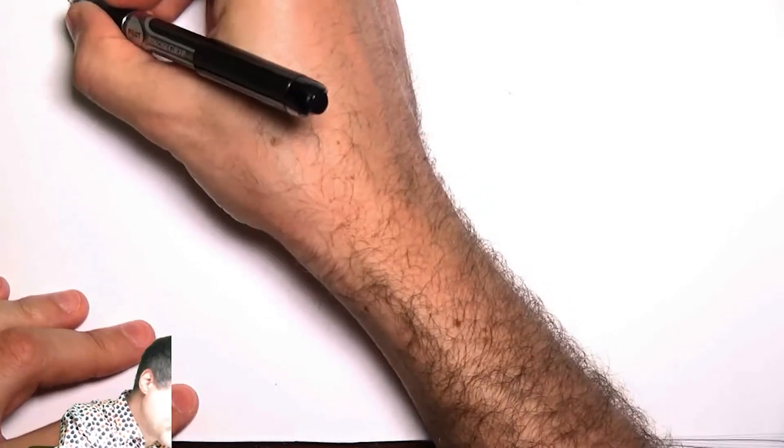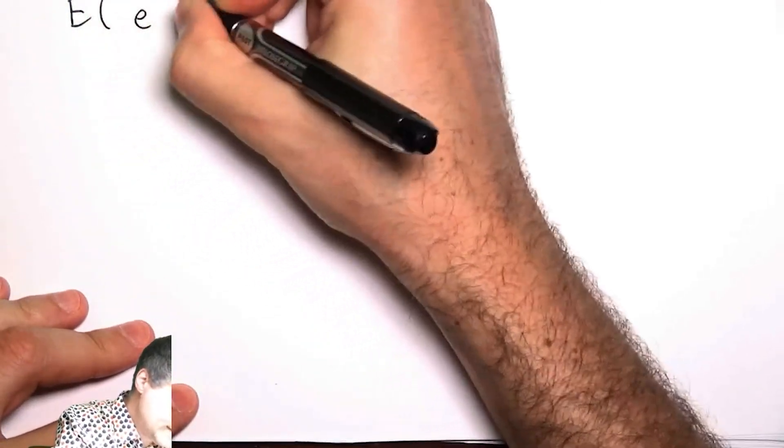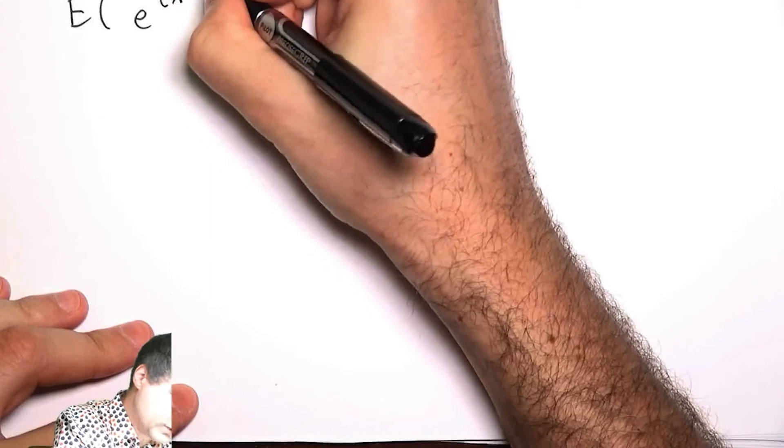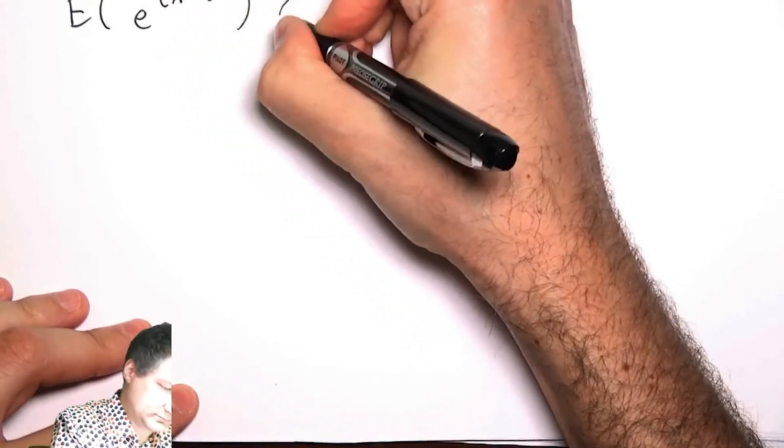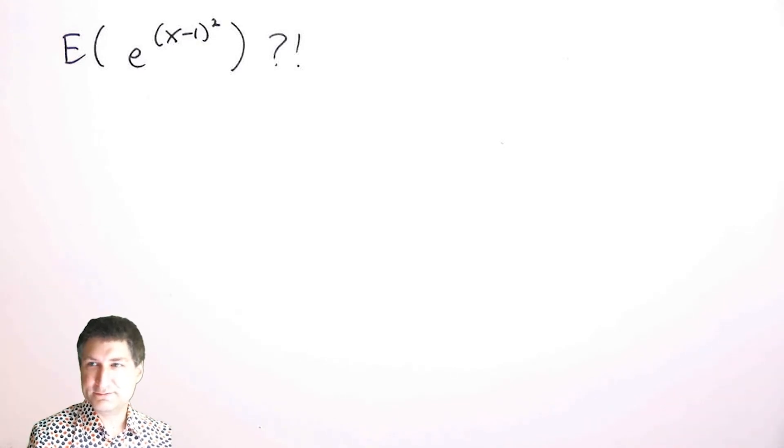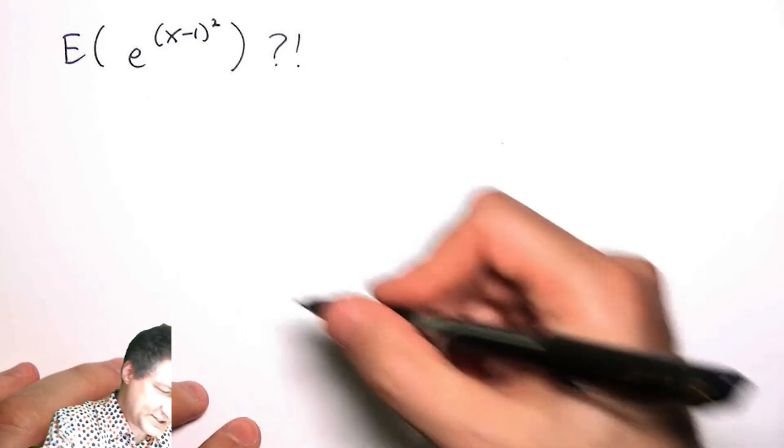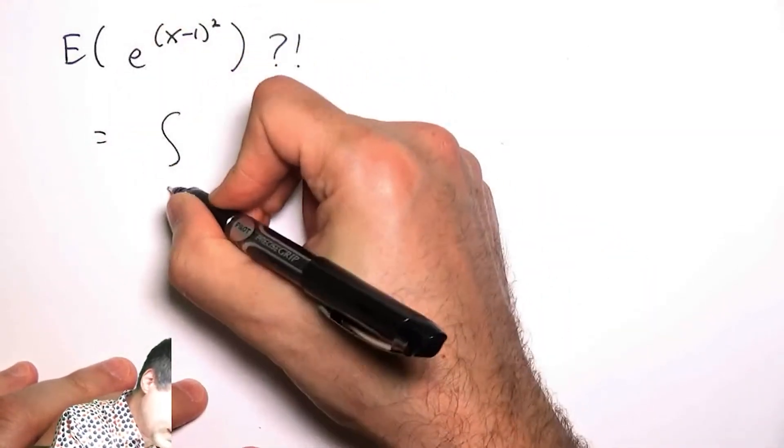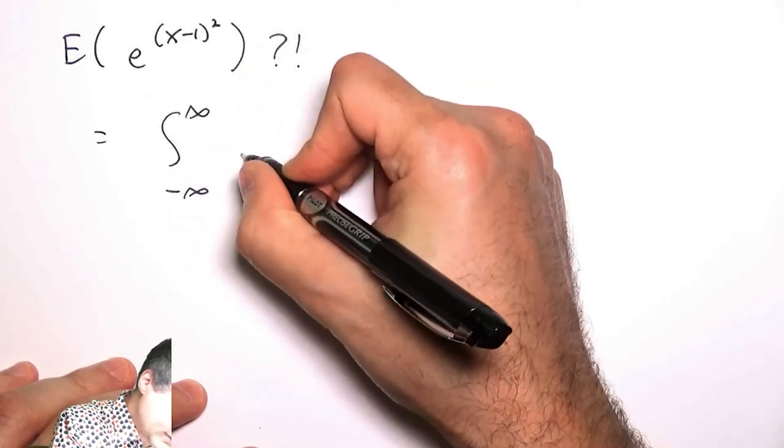Let's do something a little bit trickier. What if I wanted to know E(e^(x-1)²)? That looks like a real mess, but I've constructed the problem so this is actually not that bad. Again, I take whatever the function is—e^(x-1)²—